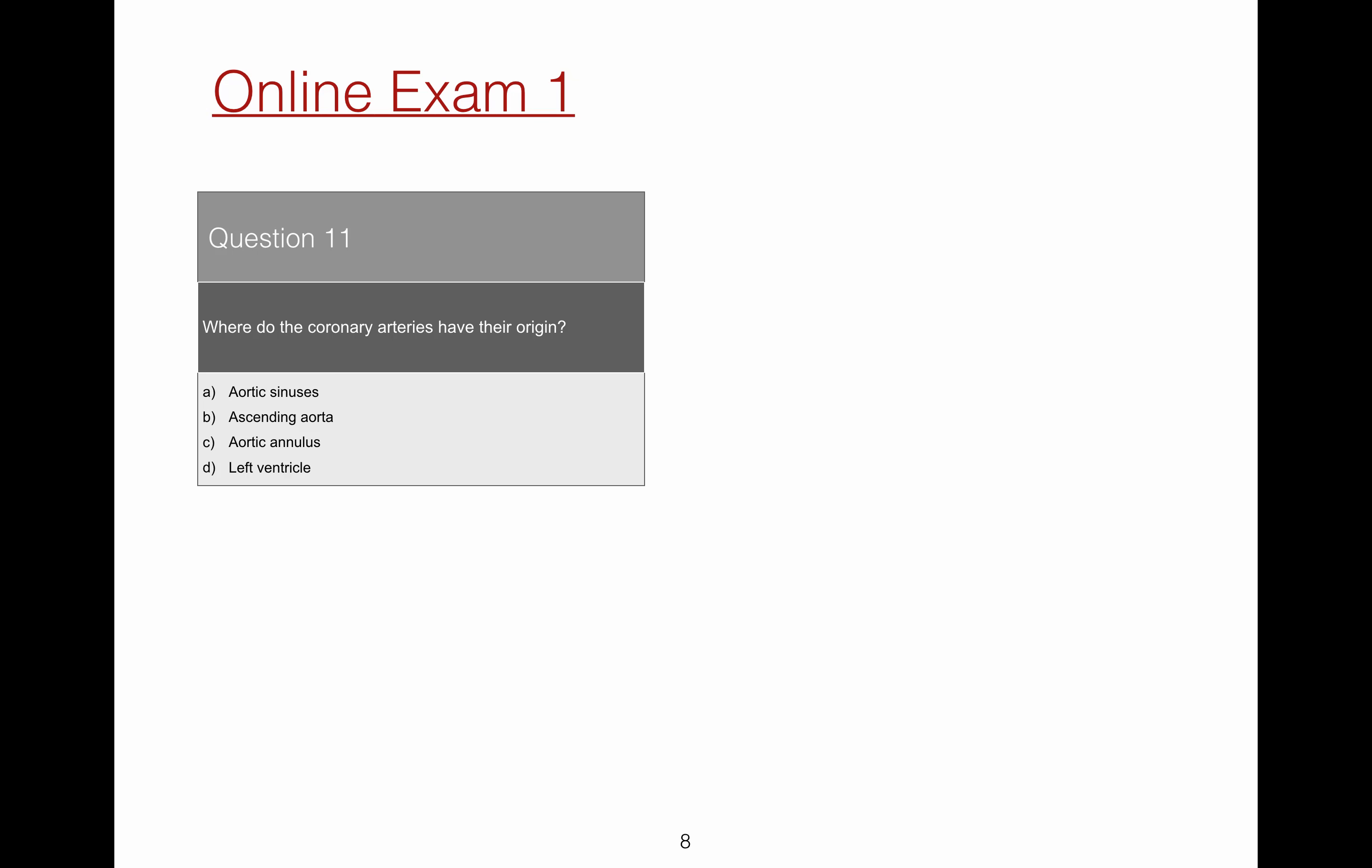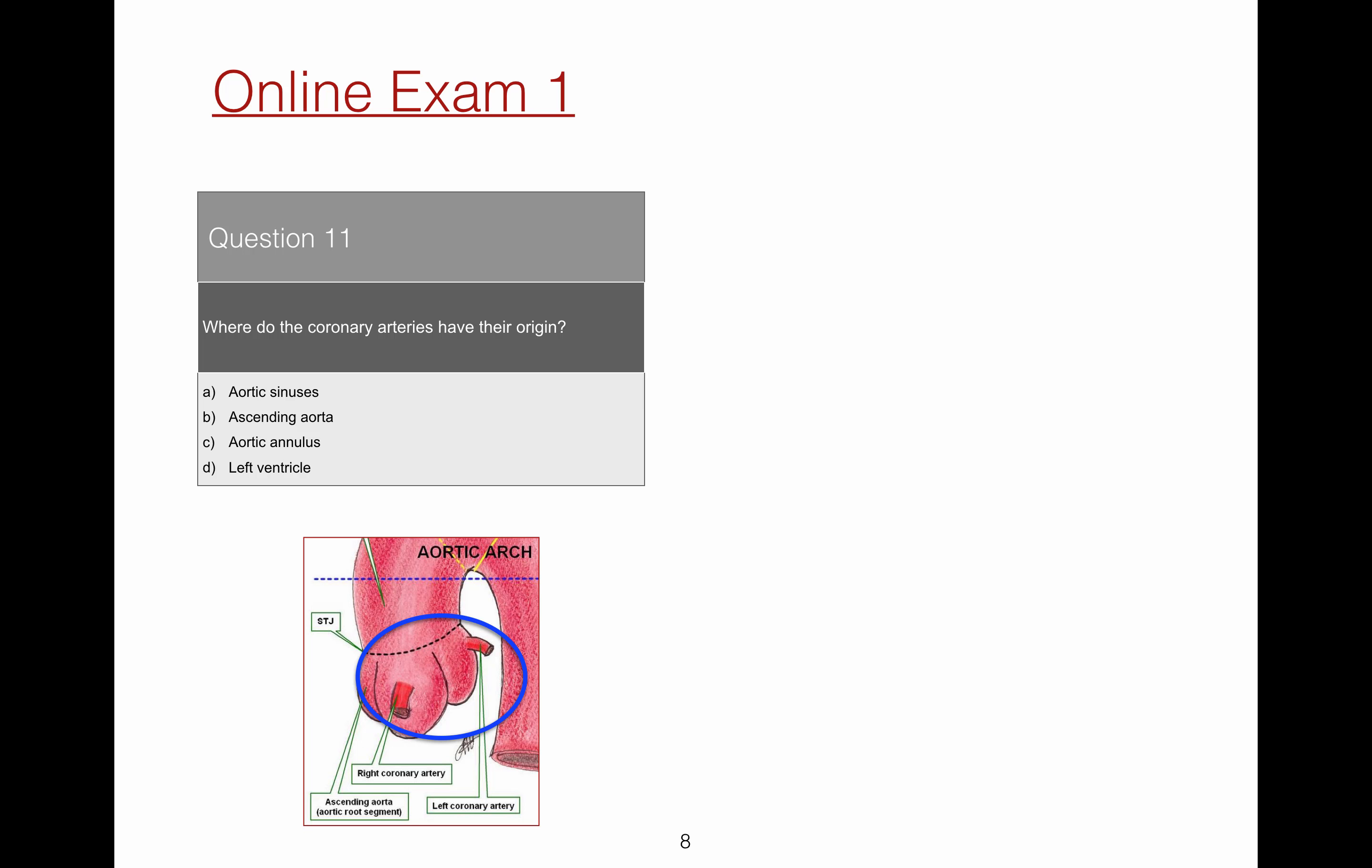Question 11. Where do the coronary arteries have their origin? The origin of the coronary arteries are the aortic sinuses.